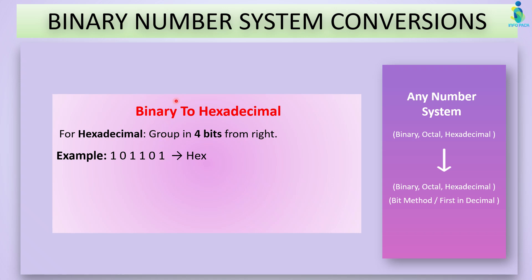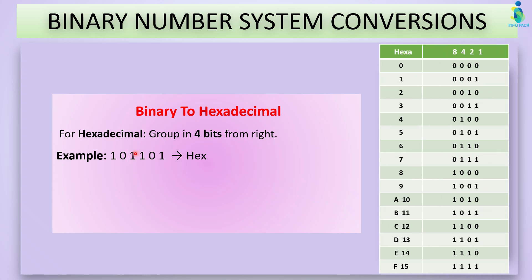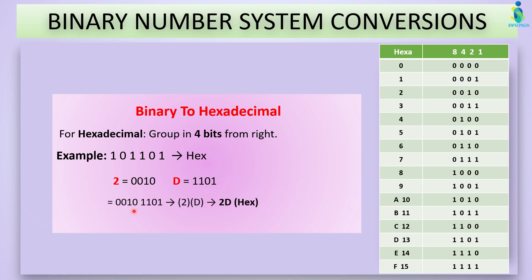Now let's convert from binary to hexadecimal. To convert from binary to hex, we use groups of four bits from the right side. The first group is 1011, which is B. The next group is 1101, which is D — that is 13 in hexadecimal. Now make another group — it's 01, so to complete four bits we add two zeros on the left, making 0010, which is 2. Combine all groups — the answer will be 2D in hex.